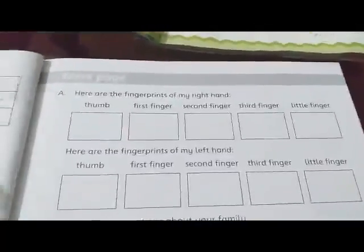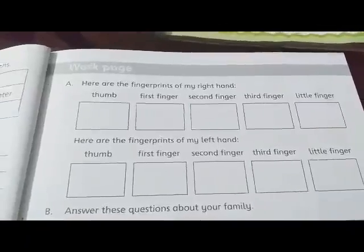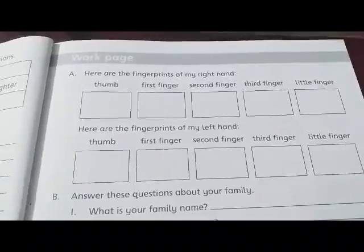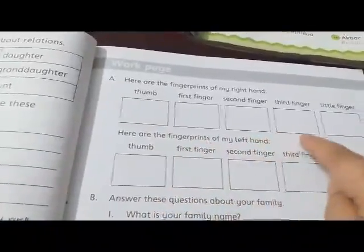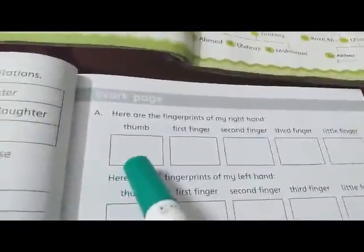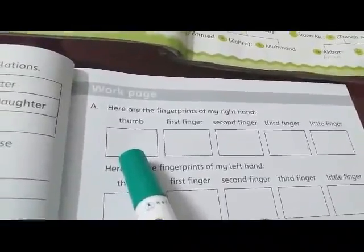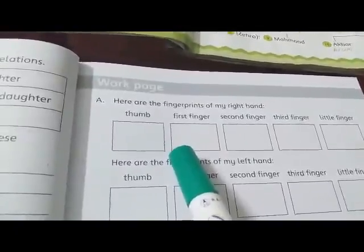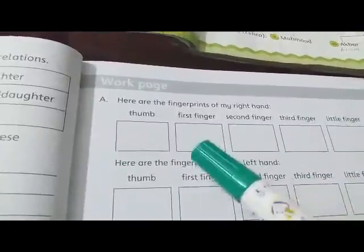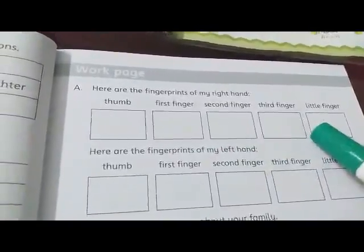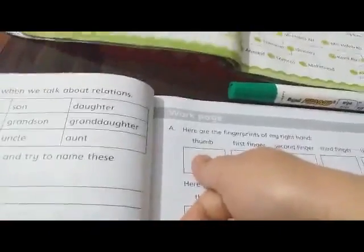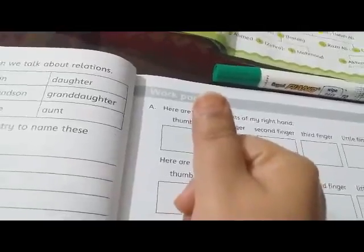Exercise A: here are the finger prints of my right hand. آپ نے کیا کرنا ہے - یہاں پر one, two, three, four, five - آپ کو یہاں five boxes نظر آ رہے ہیں۔ آپ نے box number one میں thumb سے اپنا fingerprint بنانا ہے۔ Then first finger کا fingerprint لگانا ہے، یہاں second finger کا، یہاں third finger کا، اور یہاں little finger کا۔